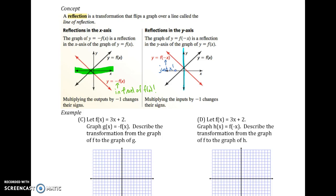You might wonder if this is the opposite of before. When we were moving horizontally, that was happening to just x. When we went up and down vertically, that was happening to the whole function. It actually maintains the same pattern. When we're looking at the x-axis, x equaling something is a vertical line. The whole function y is a horizontal line. So if we're messing with the whole function, we're flipping across a horizontal line — the trend is consistent.